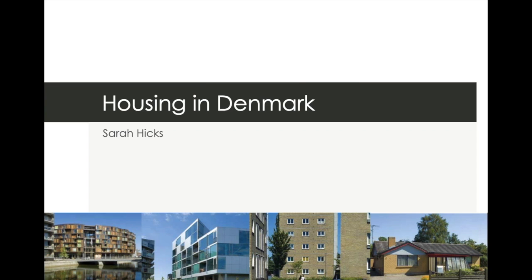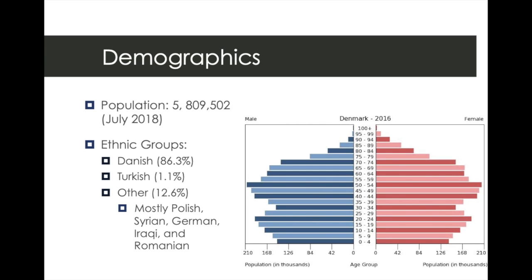To start we'll look at the demographics. The population as of 2018 was just under 6 million people. A high percentage of those people end up living in the capital city of Copenhagen. This is where I studied abroad, but I'll really focus on the fact of a variety of culture. The ethnic groups that make up Denmark include mostly Danish people, which is primarily white people.